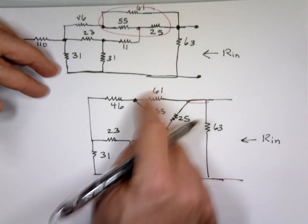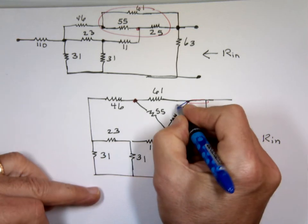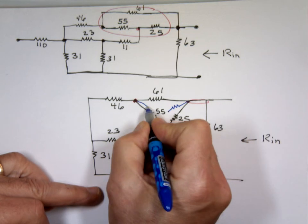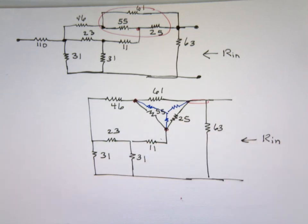Now I'm going to take this delta and change it to a Y. It's going to have a value. I'll use blue here. It's going to have a value in this direction, one in that direction, and one down. So let's see if I do that. Does that simplify my circuit?